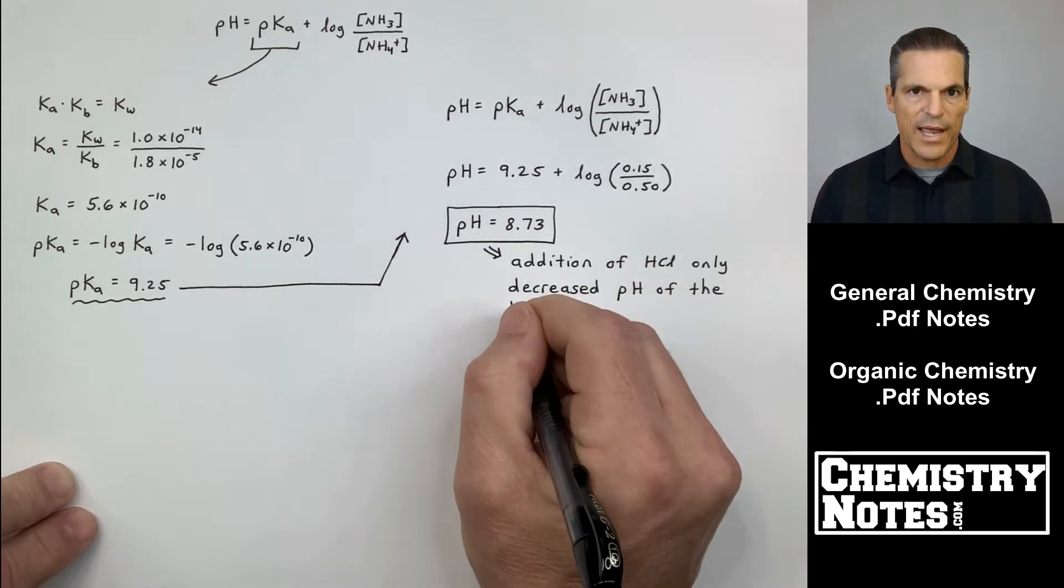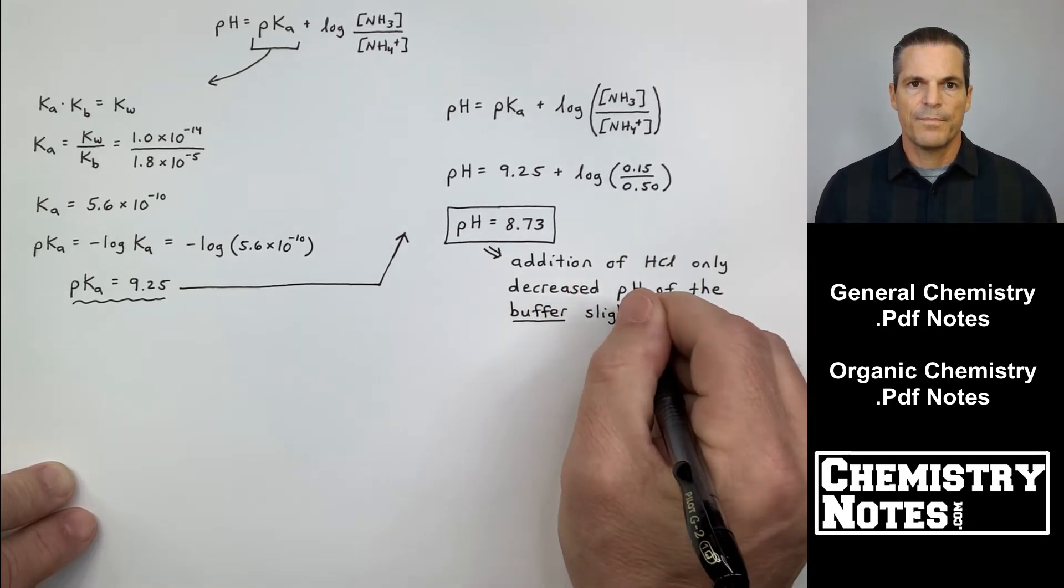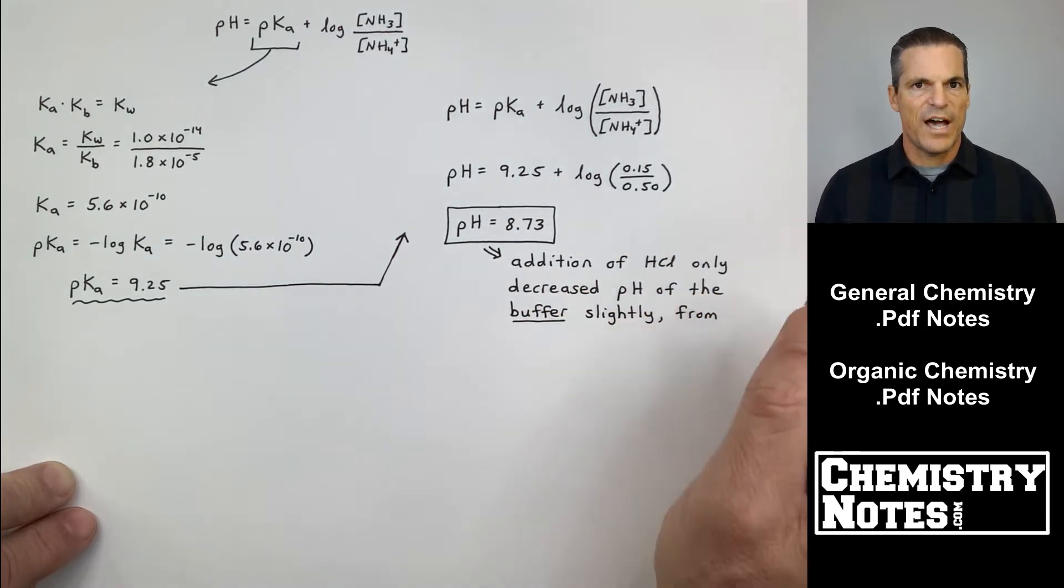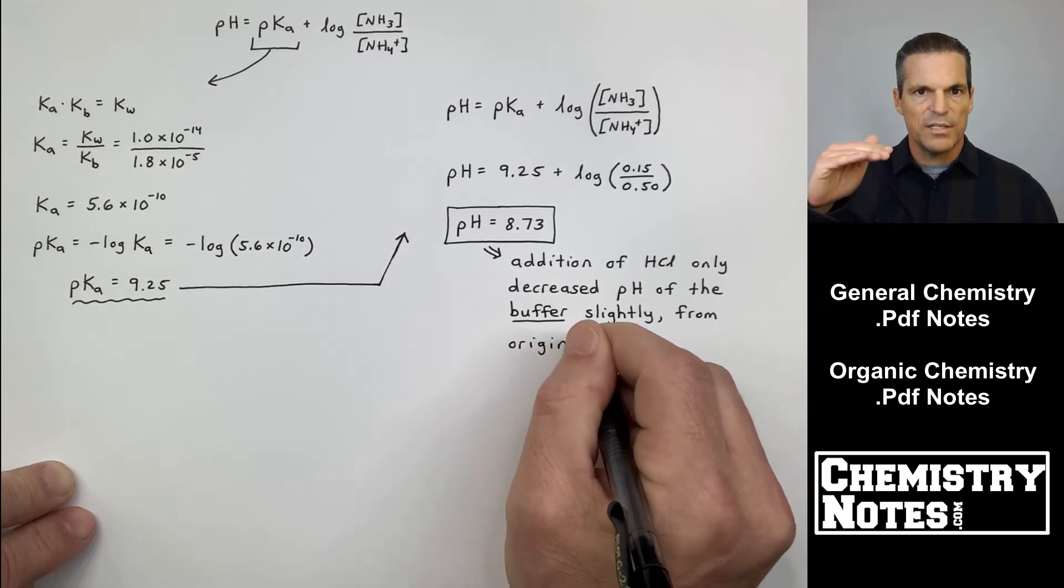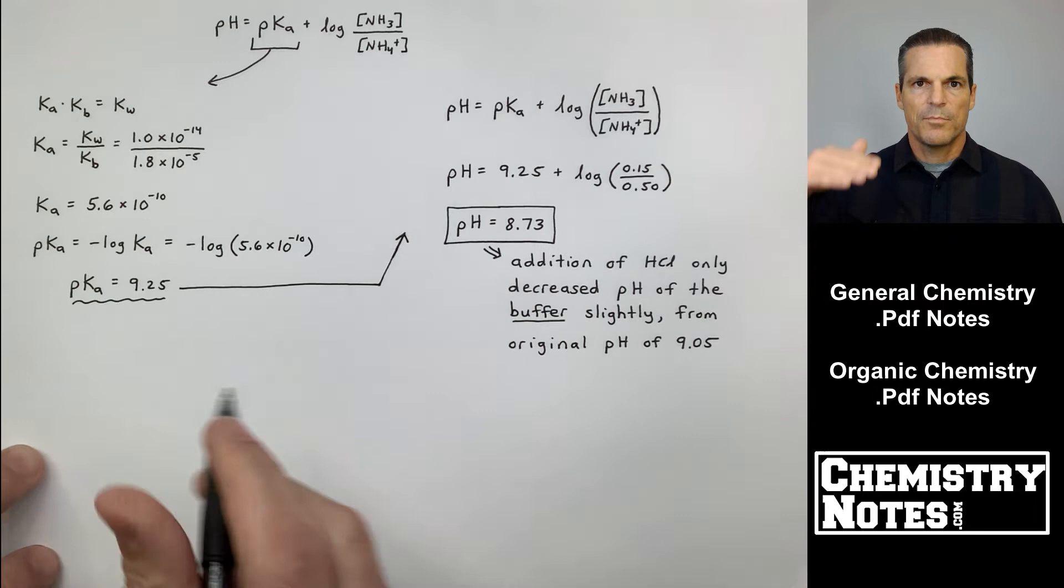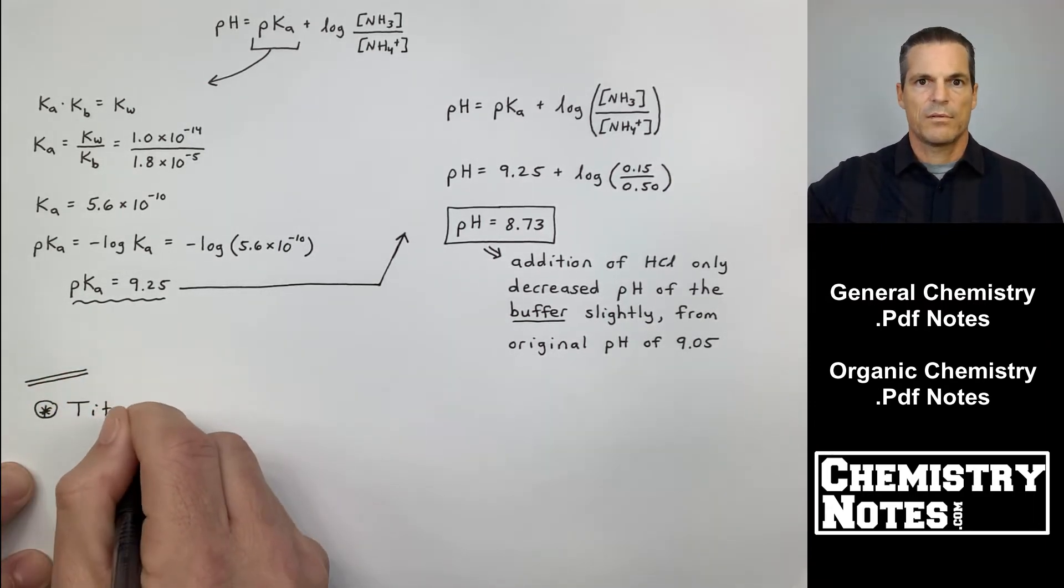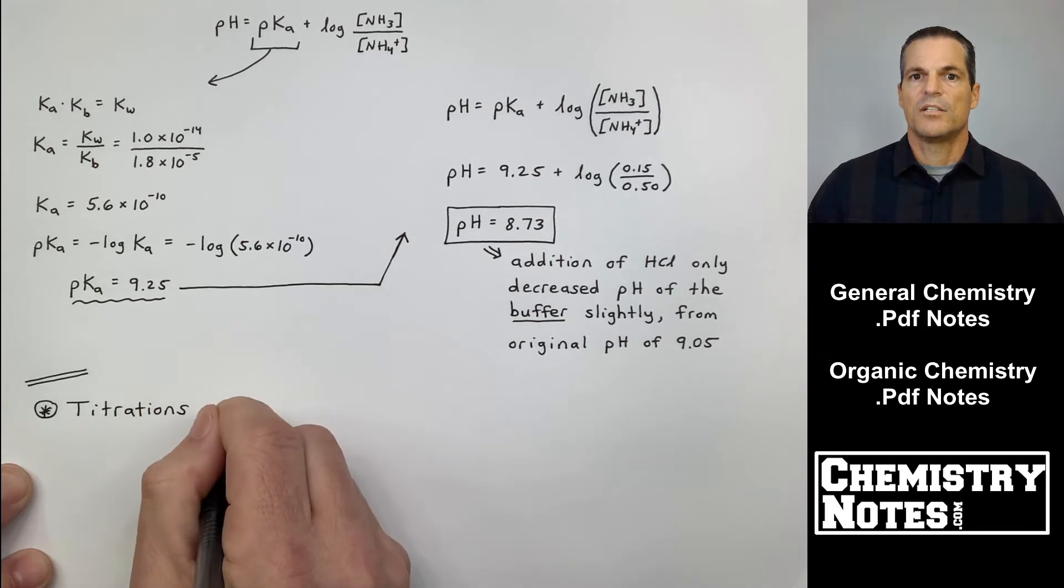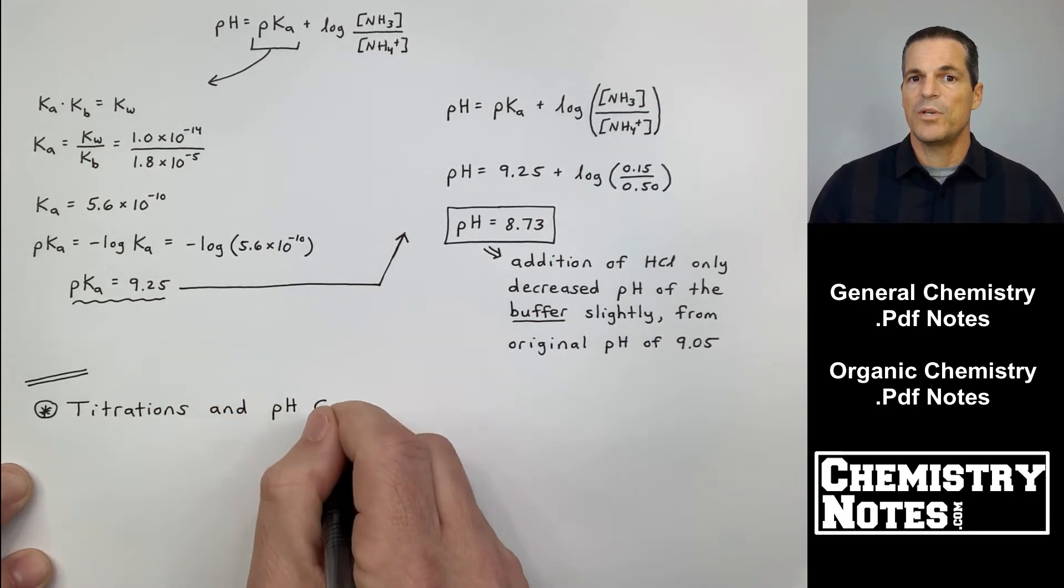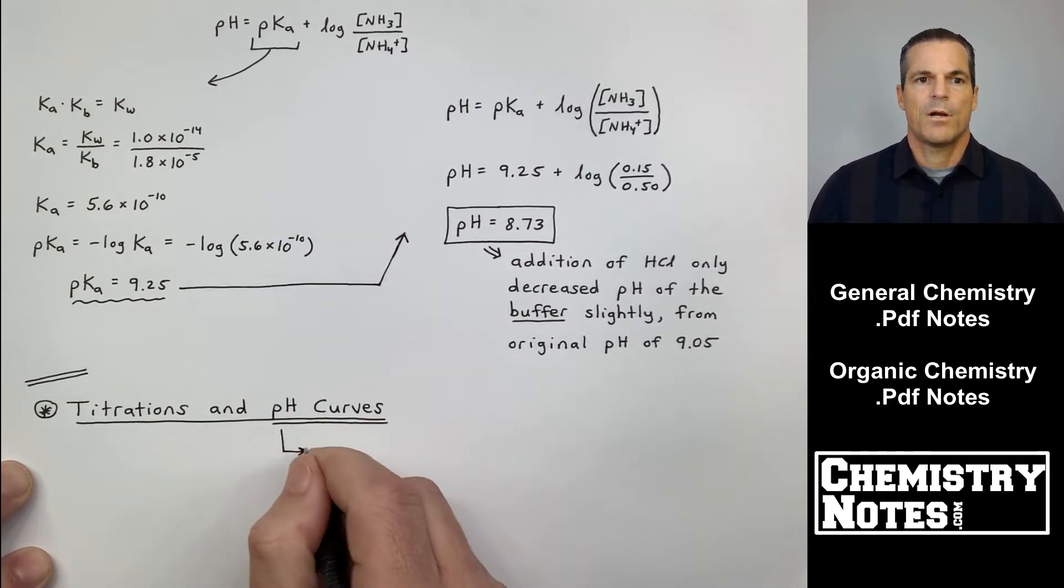I added a really strong acid, hydrochloric acid, and the pH went from 9.05 only down to 8.73. If I had added hydrochloric acid to water, the pH would have gone from 7, neutral for water, way, way down. So it says there, addition of HCl only decreased the pH of the buffer slightly from the original pH of 9.05.